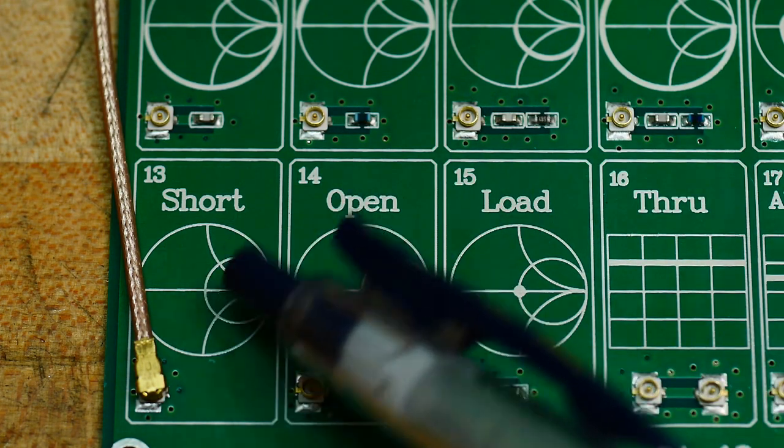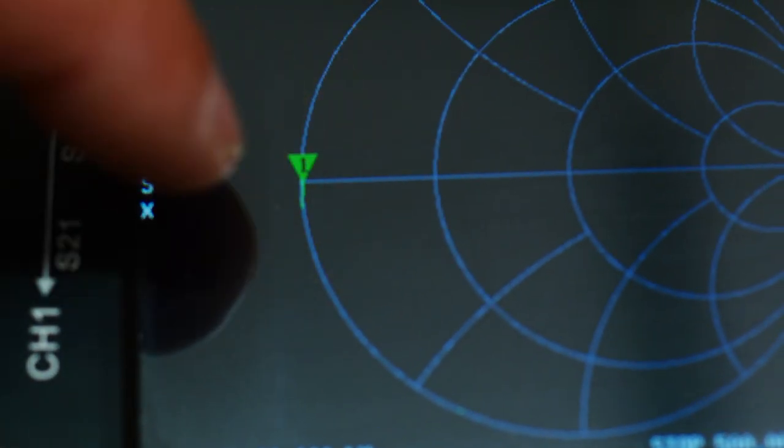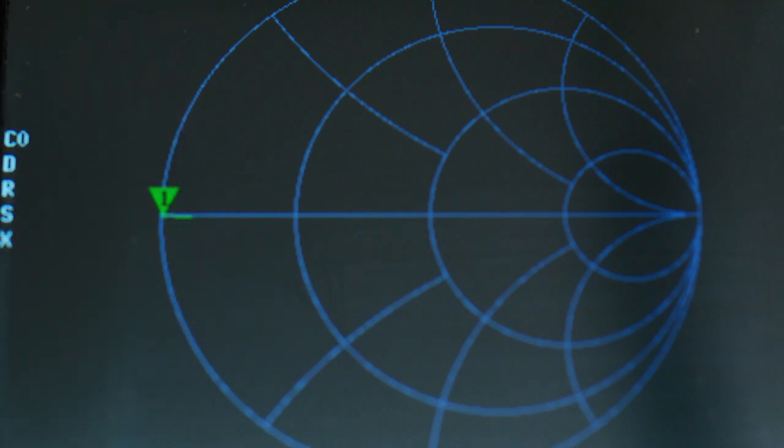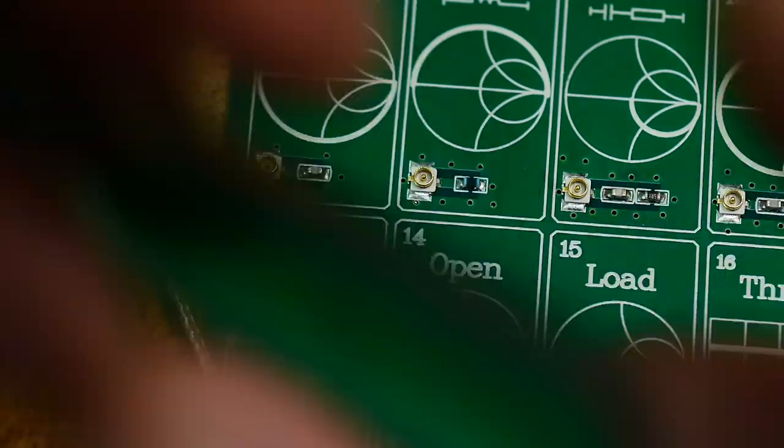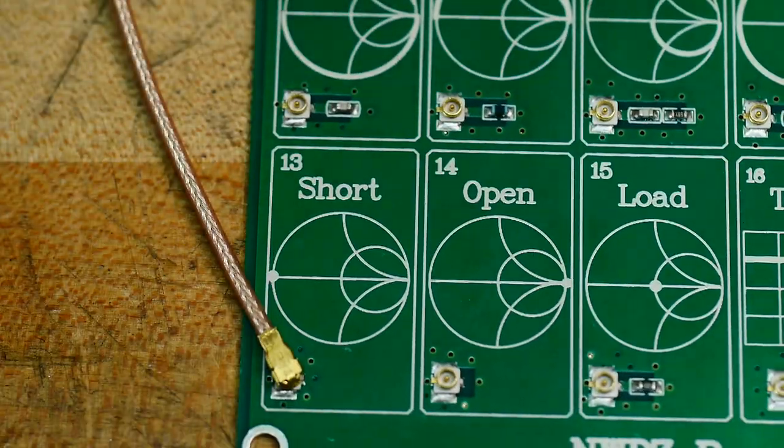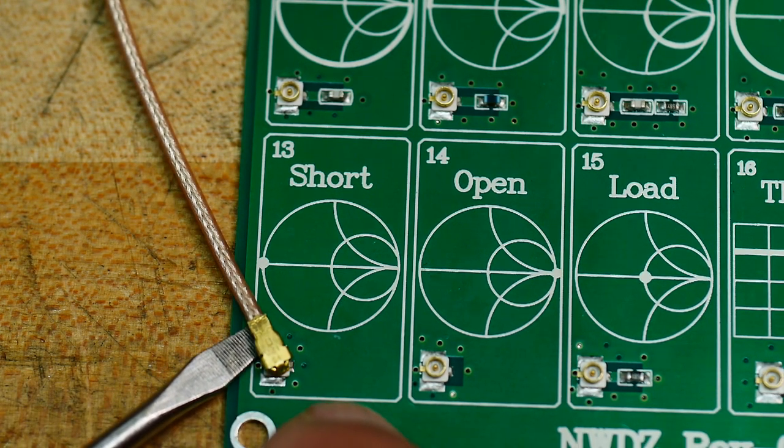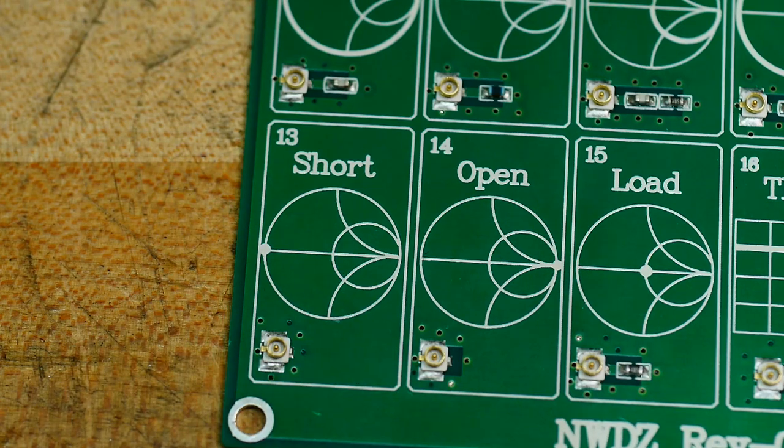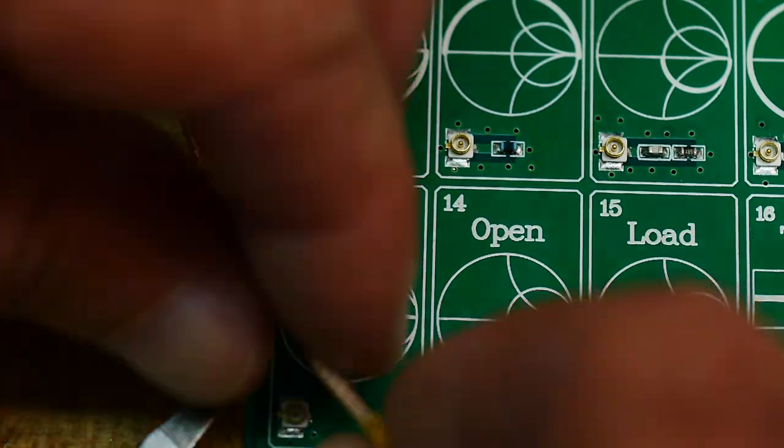Okay, first we'll connect the short and see if that's working. And that looks good. The point is over here on the left hand side of the Smith chart. So that's looking good. So now what I found is to remove these things without breaking anything, I put a little screwdriver blade underneath the connector and then pry up. So that will save you from breaking anything.